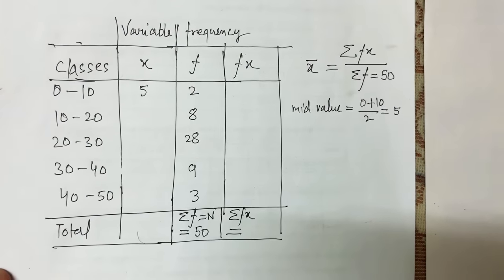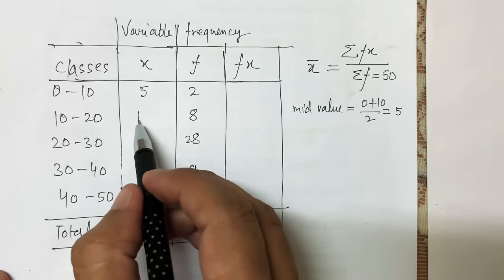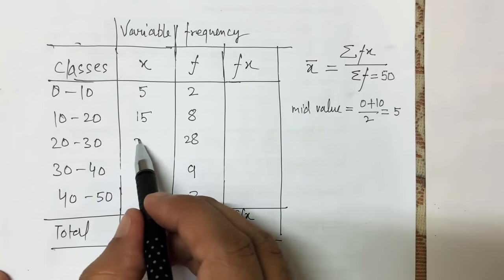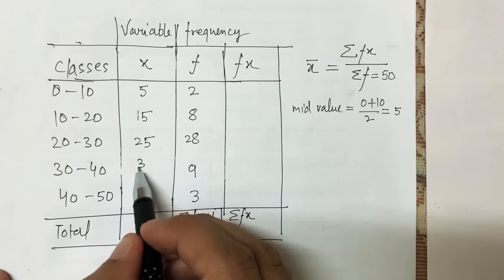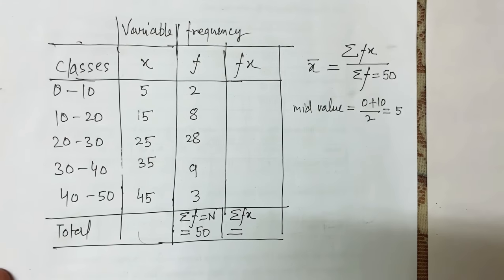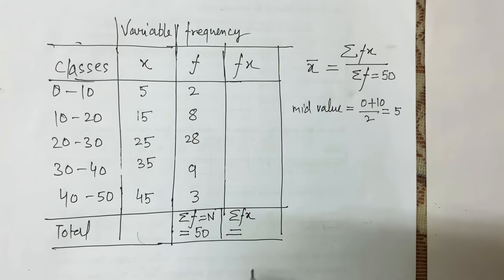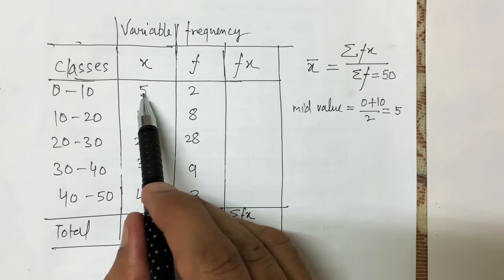Calculating mid values for the remaining classes: (10 + 20)/2 = 15, then 25, 35, and 45 respectively.